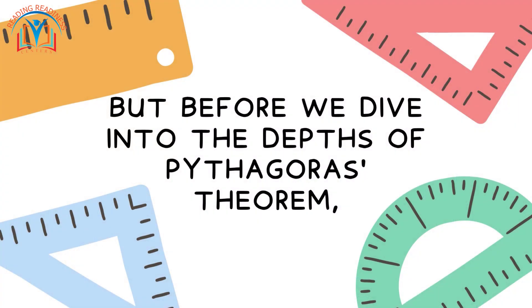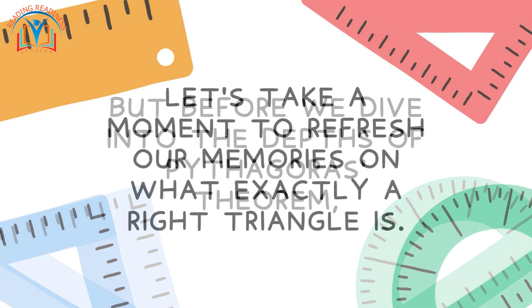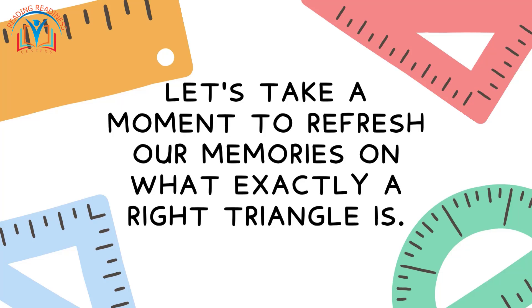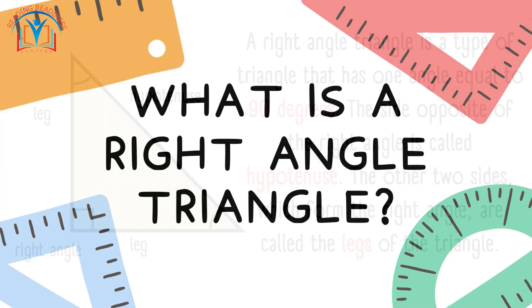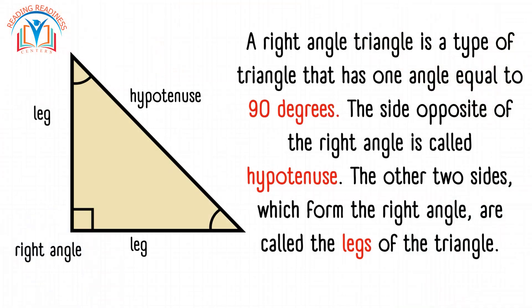But before we dive into the depths of Pythagoras Theorem, let's take a moment to refresh our memories on what exactly a right triangle is. A right triangle is a type of triangle that has one angle equal to 90 degrees. The side opposite of the right angle is called hypotenuse. The other two sides, which form the right angle, are called the legs of the triangle.